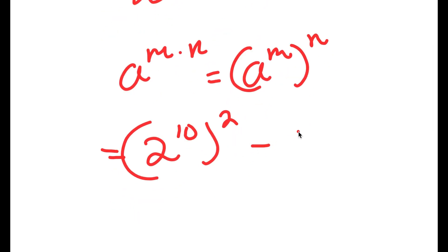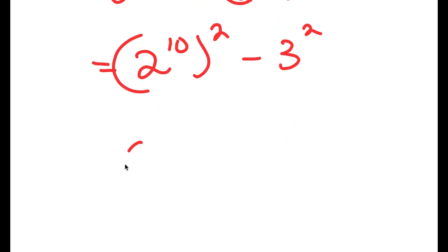And now I have this minus 9, which is the same thing as 3 squared. Now, if I have something in the form a squared minus b squared, this is equal to a plus b times a minus b.